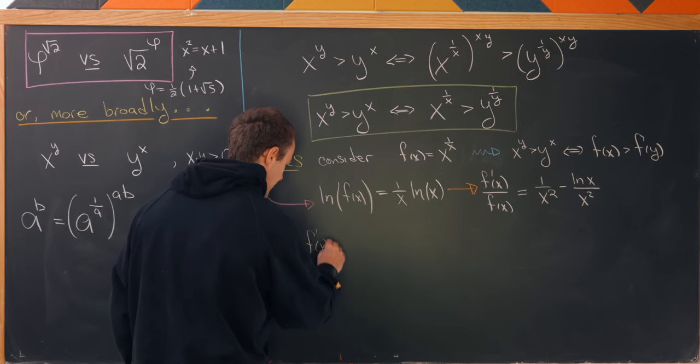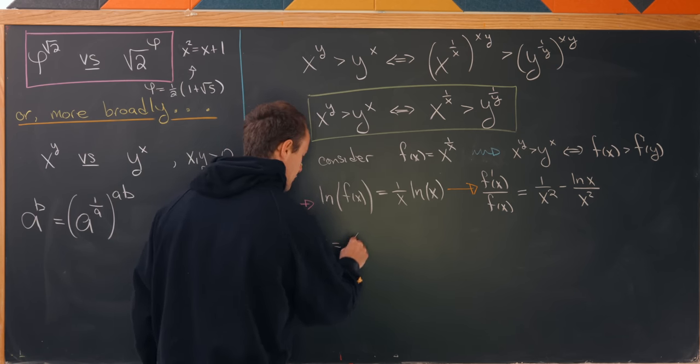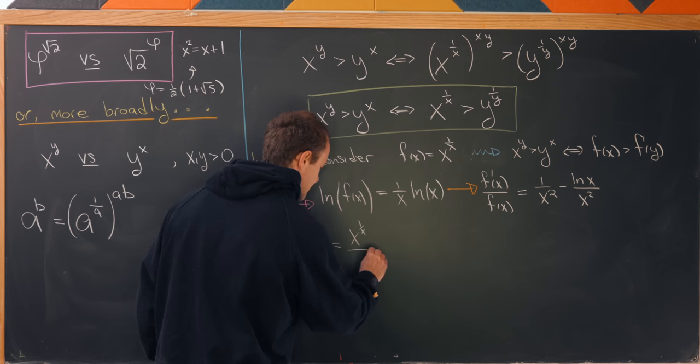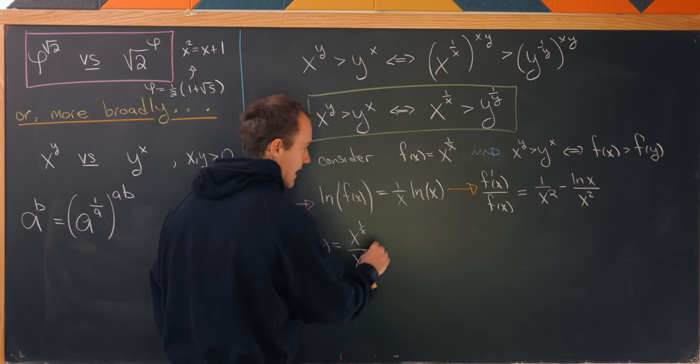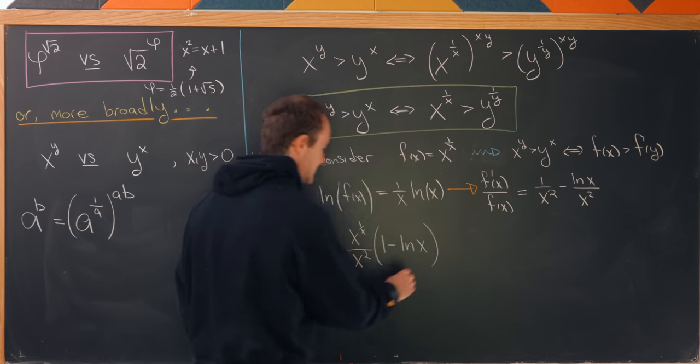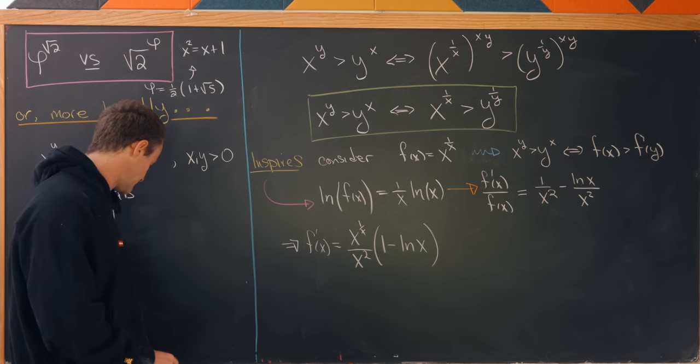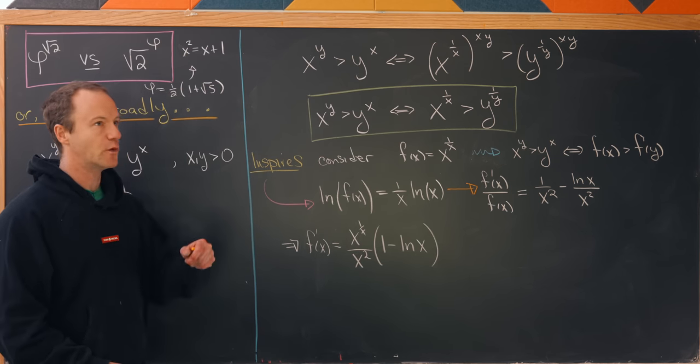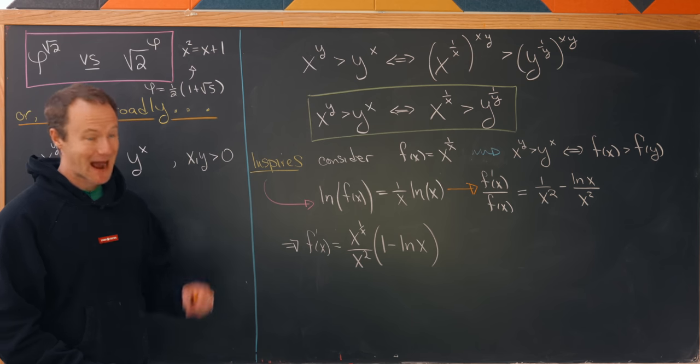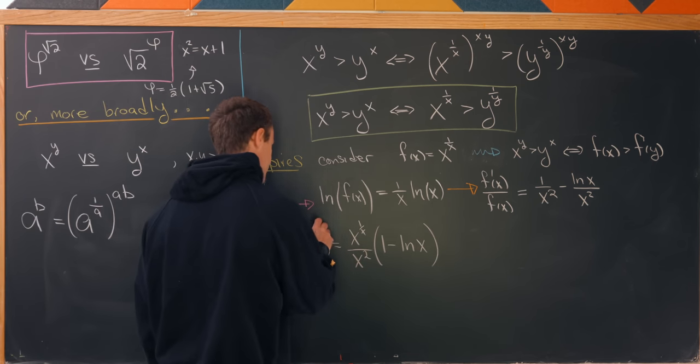Notice that f prime of x is exactly equal to x to the 1 over x over x squared times 1 minus the natural log of x. That's after moving some things around. So now if we wish to find the maximum, we need to set the derivative equal to 0.